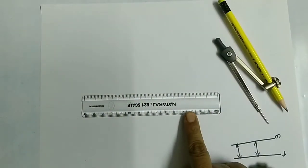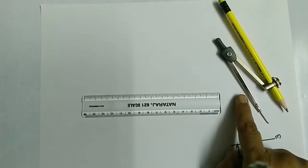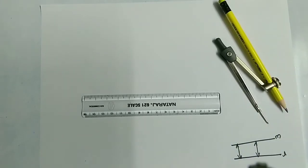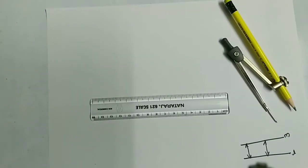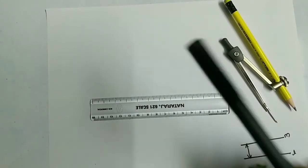For the construction, you will need a ruler or a scale and a compass with a pencil. I'm using this pen so that it is dark, but you can use another pencil for that.